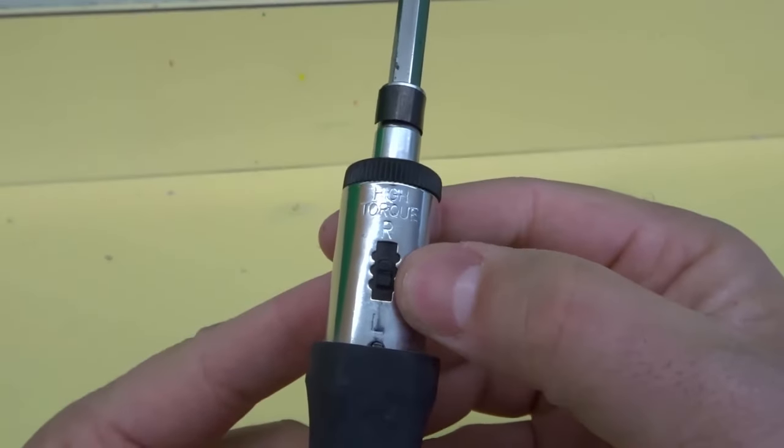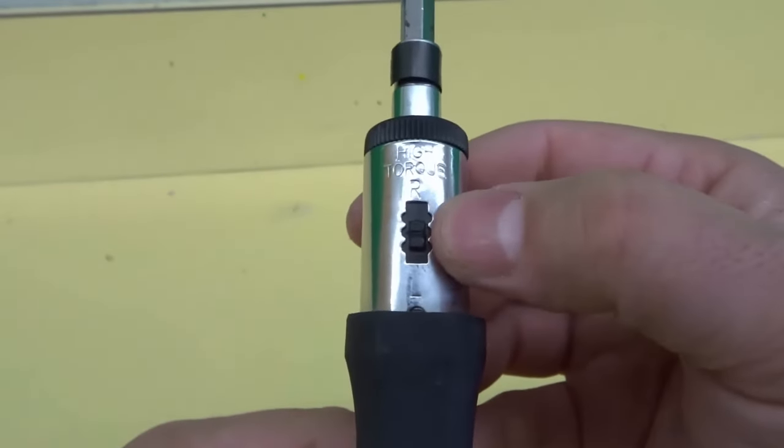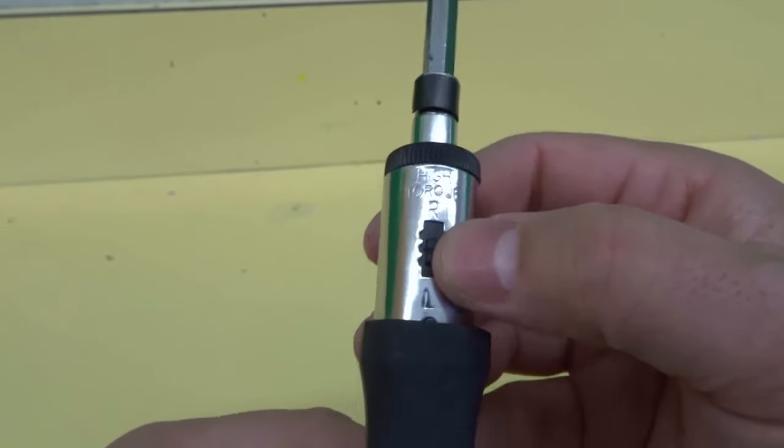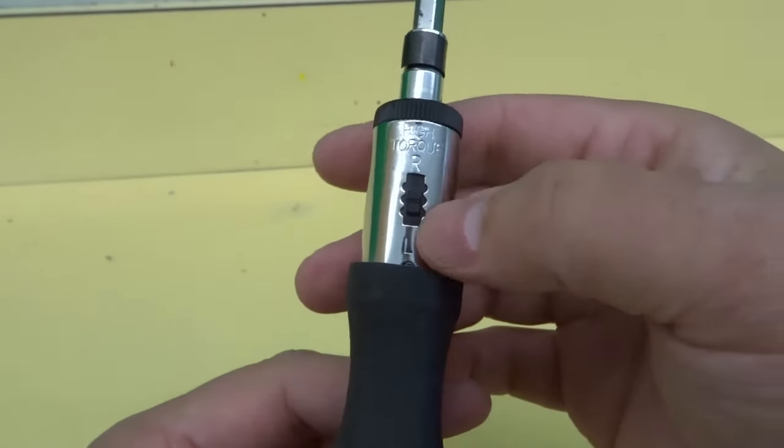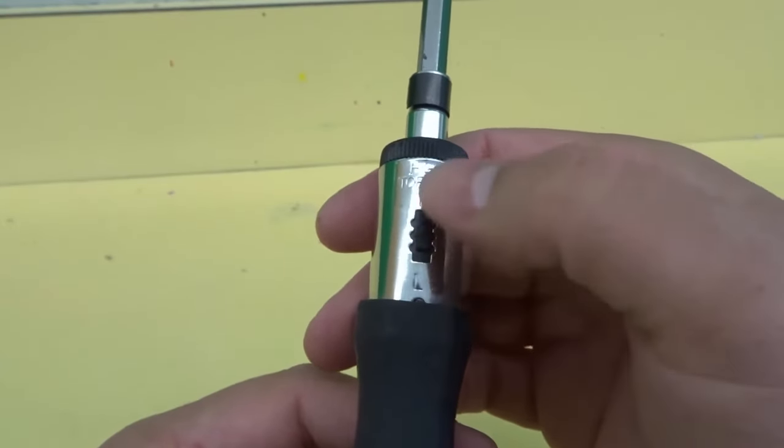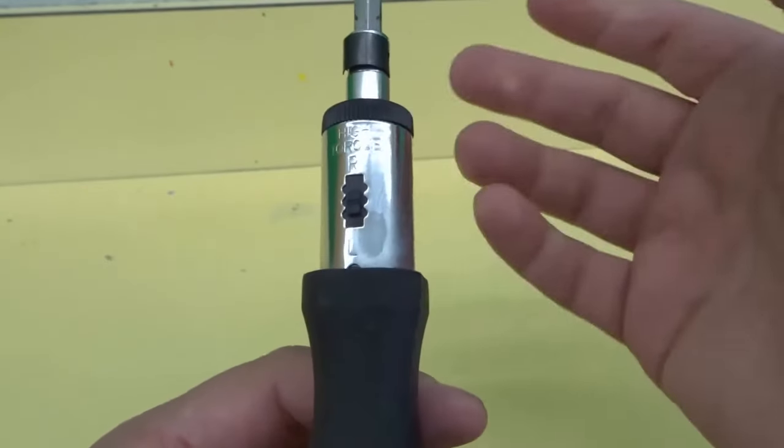Now if you take a look closely, you can actually see that one says R and one says L, right and left. So at the end of the day, you don't really need any indications because you can try it in one direction and then try it in the other direction.